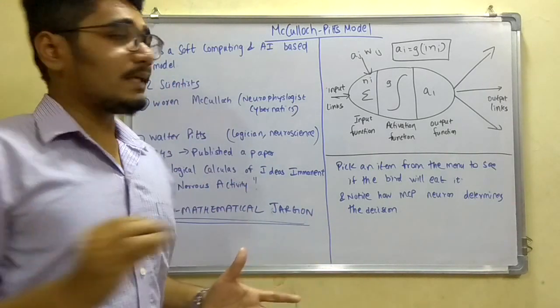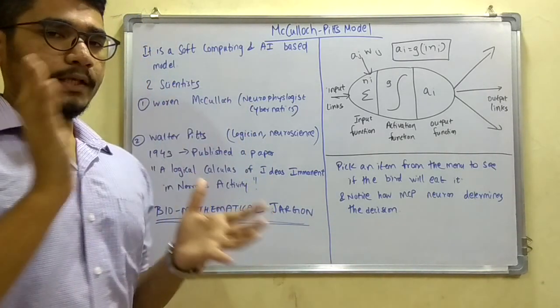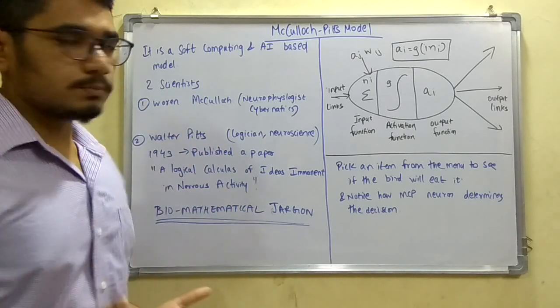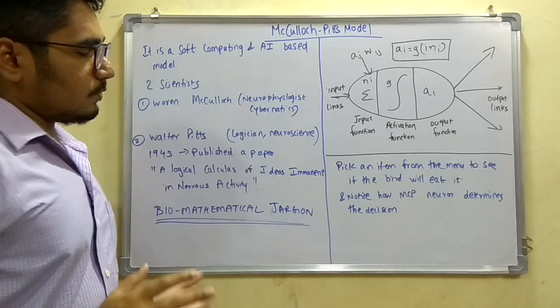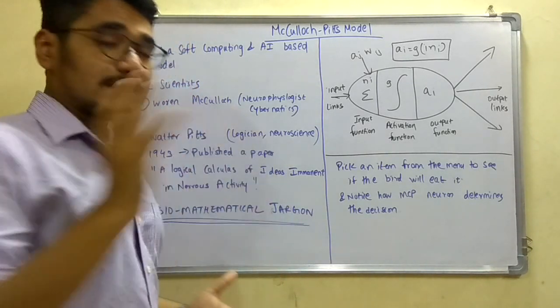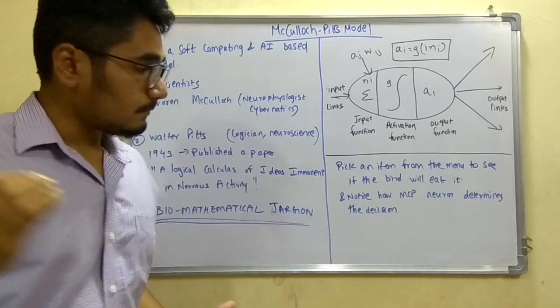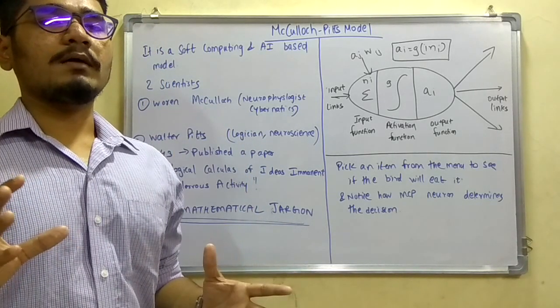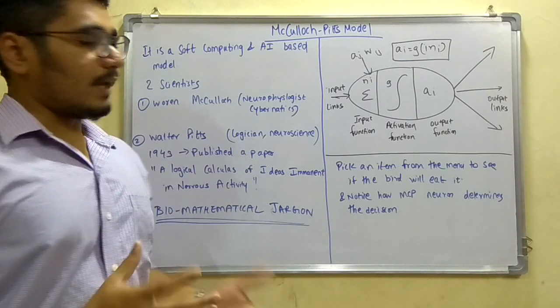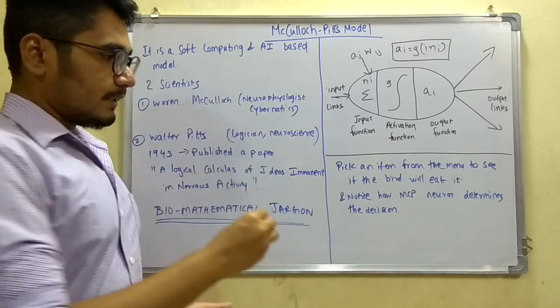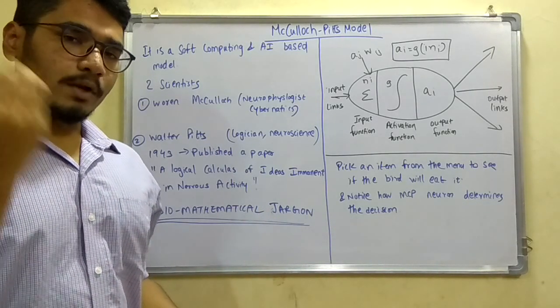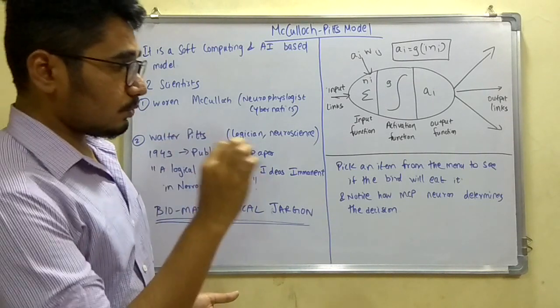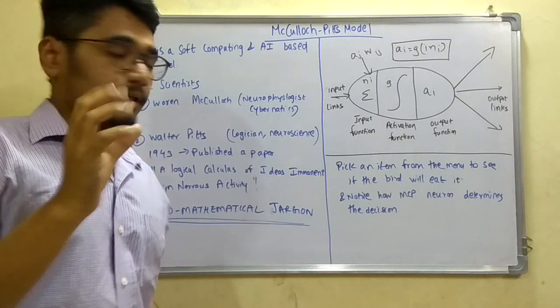After processing all these things, it may produce the outputs and the output is given as AI is equal to G of I into NI, means all the components which this MCP has, it compresses it and it will produce this particular output. So this is a small introduction or constructive diagram for understanding the McCulloch-Pitt model, but this is also very complex. I will simplify even more by taking an example. So in that example, they are saying that we have to pick an item from the menu.